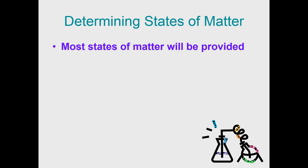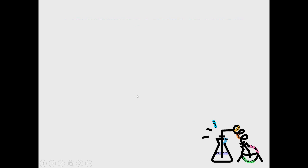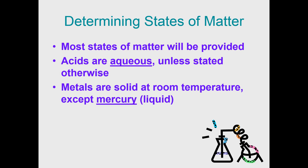When writing chemical equations, you typically want to write the state of matter after each substance. States include solid (s), liquid (l), and gas (g), plus a fourth option: aqueous (aq). Aqueous means dissolved in water — acids are always aqueous unless stated otherwise, because acids are typically diluted in water rather than in pure form. Metals are solid at room temperature, so you don't need to be told copper is a solid — except mercury, which is a liquid at room temperature.